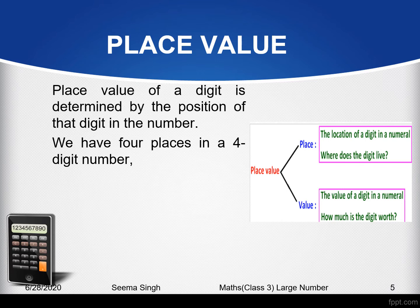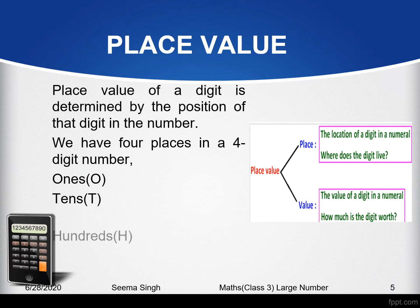There are four places in a four-digit number, just as there are three places in a three-digit number. The four places, starting from the right side, are: ones, tens, hundreds, and thousands. So the four places in a four-digit number are ones, tens, hundreds, and thousands.